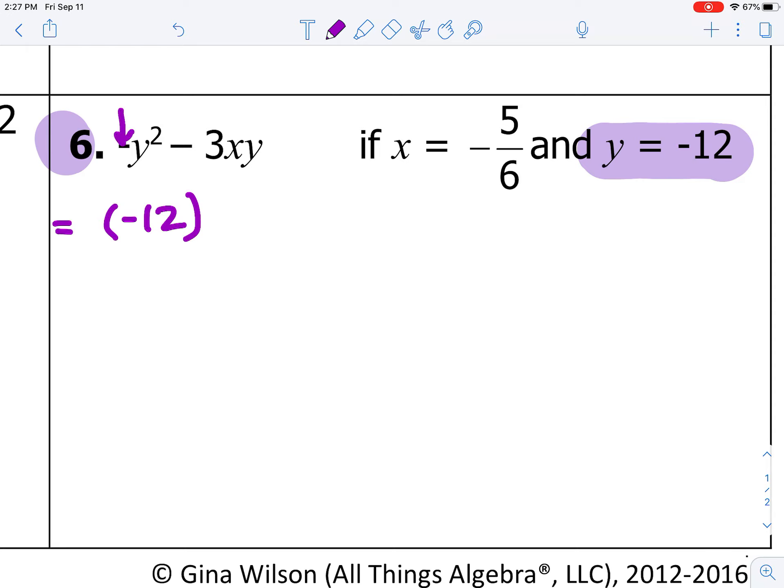Now, please notice that in front of Y, we have a negative. So, that means I need a negative in front of the parentheses that I put the negative 12 in. Then, please notice that you have a square on the outside of Y. So, I need a square right here on the outside of my parentheses.